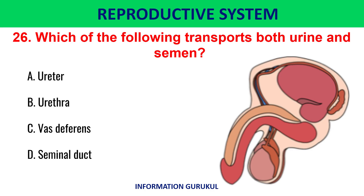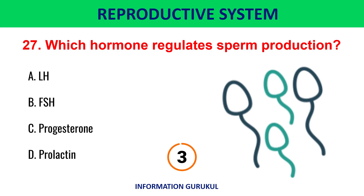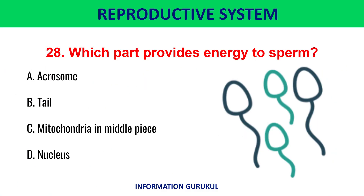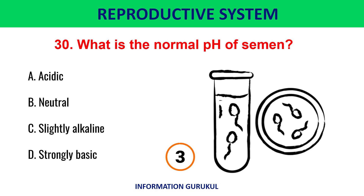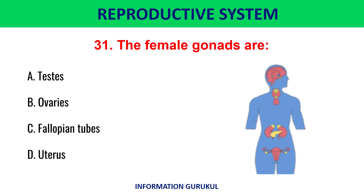Which of the following transports both urine and semen? Urethra. Which hormone regulates sperm production? Follicle stimulating hormone. Which part provides energy to sperm? Mitochondria in the middle piece. The tip of the sperm that contains enzymes to penetrate the ovum is the acrosome. What is the normal pH of semen? Slightly alkaline. The female gonads are ovaries.